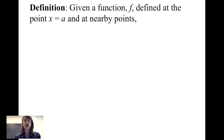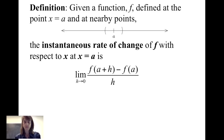Given a function f defined at the point x equals a and at nearby points — in other words, we're looking at the point a and an interval including and surrounding a — the instantaneous rate of change of f with respect to x at x equals a is given by the limit of f evaluated at a plus h minus f evaluated at a, divided by h, as h goes to 0.